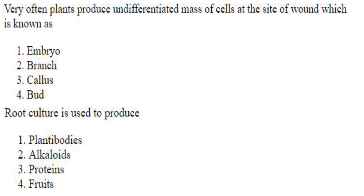Coming to the first question: very often plants produce an undifferentiated mass of cells at the site of a wound, which is known as callus. It is an undifferentiated mass of cells, so option 3 is the answer. Root culture is used to produce alkaloids, so the answer is option 2. These are direct questions, that's why I am not explaining much.